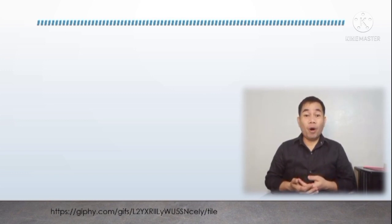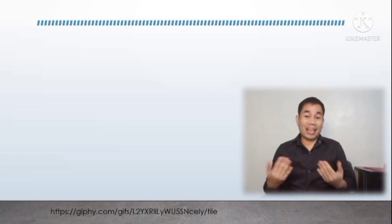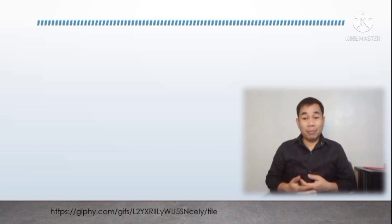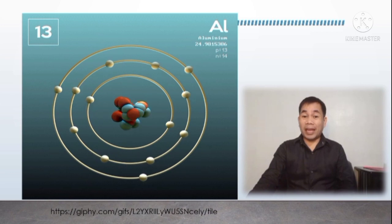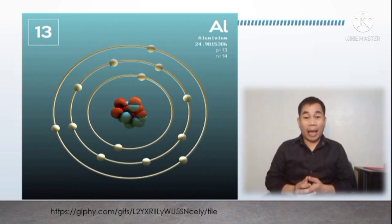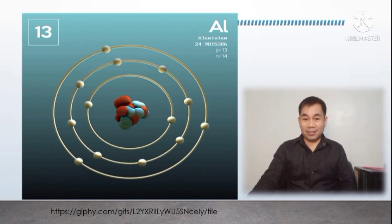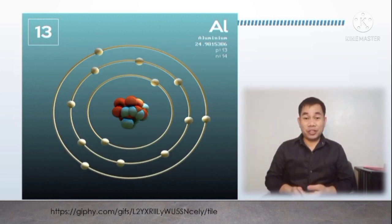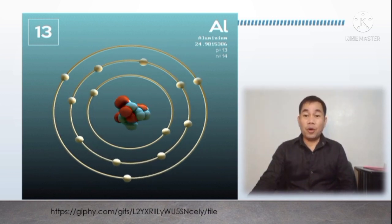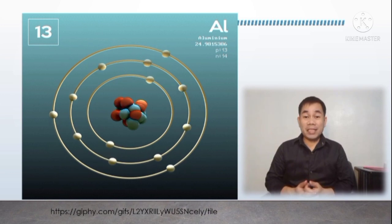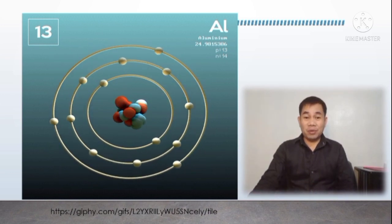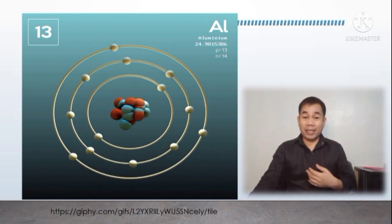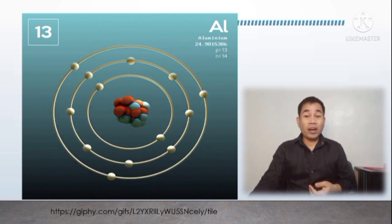How about if an element has more number of electrons and protons? How would its atom look like? Let's take a look at the atom of aluminum with an atomic number 13, with 13 electrons, 13 protons, and 14 neutrons. Aluminum is a chemical element with a chemical symbol that starts with capital A, followed by small letter L. Its 13 protons and 14 neutrons are present inside the nucleus, but its 13 electrons are orbiting around the nucleus. This only shows that the higher the number of subatomic particles the particular element has, the more complex the atom is.